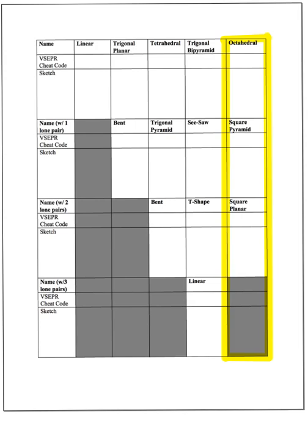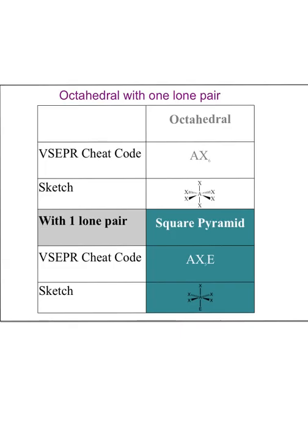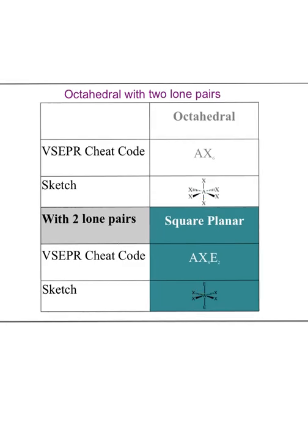The last column is octahedral variations. If I replace one bonded atom with a lone pair, the lone pair goes at the top or bottom, giving AX5E — called square pyramid. There's a square base with a pyramid going up. The last variation is AX4E2, replacing both top and bottom with lone pairs — this is called square planar, because it's a flat square shape, planar meaning two-dimensional.